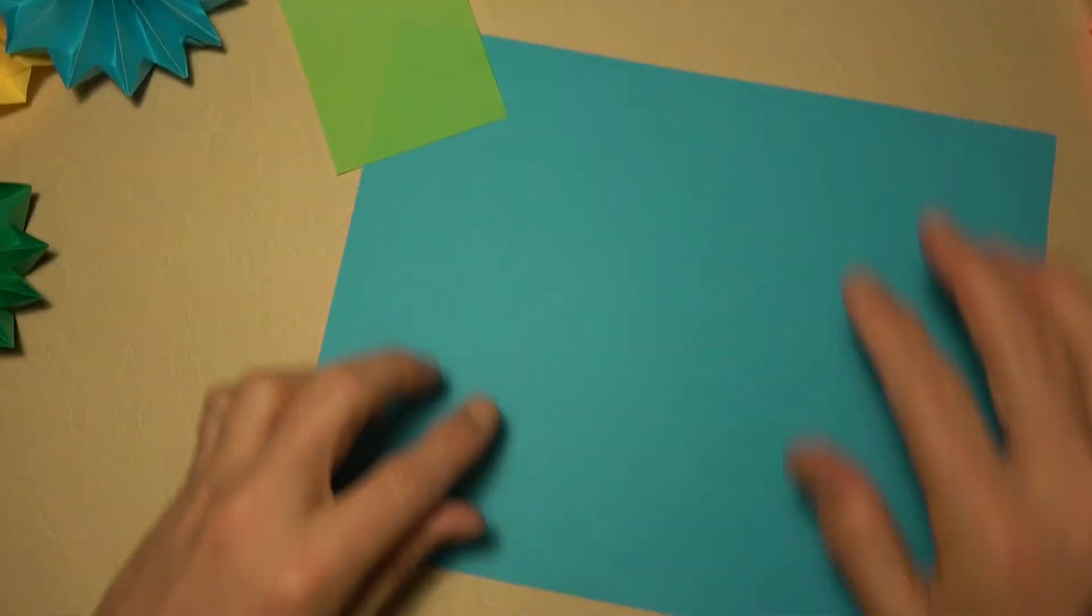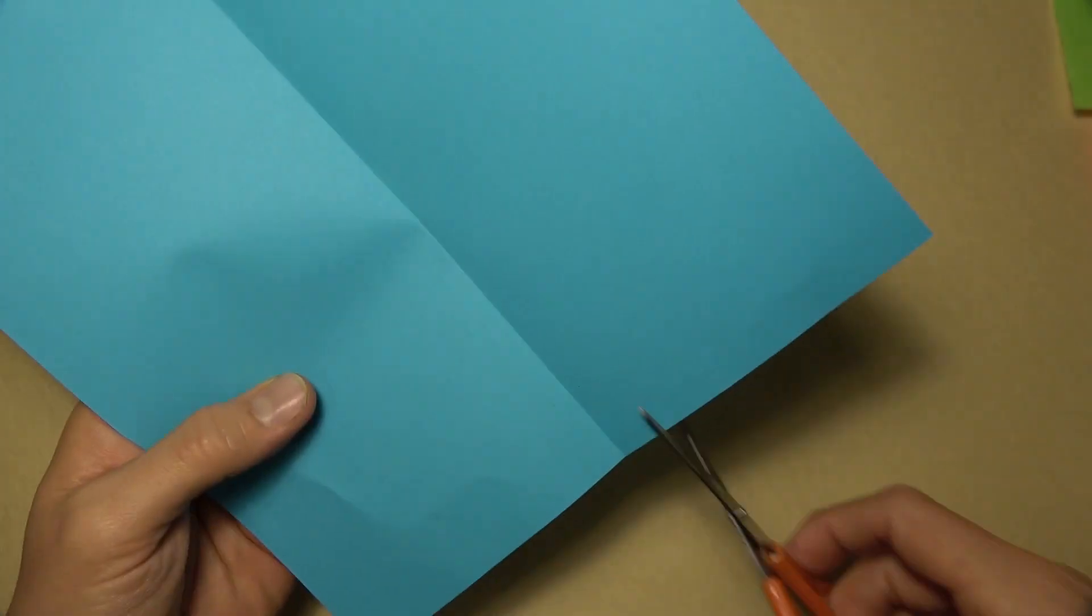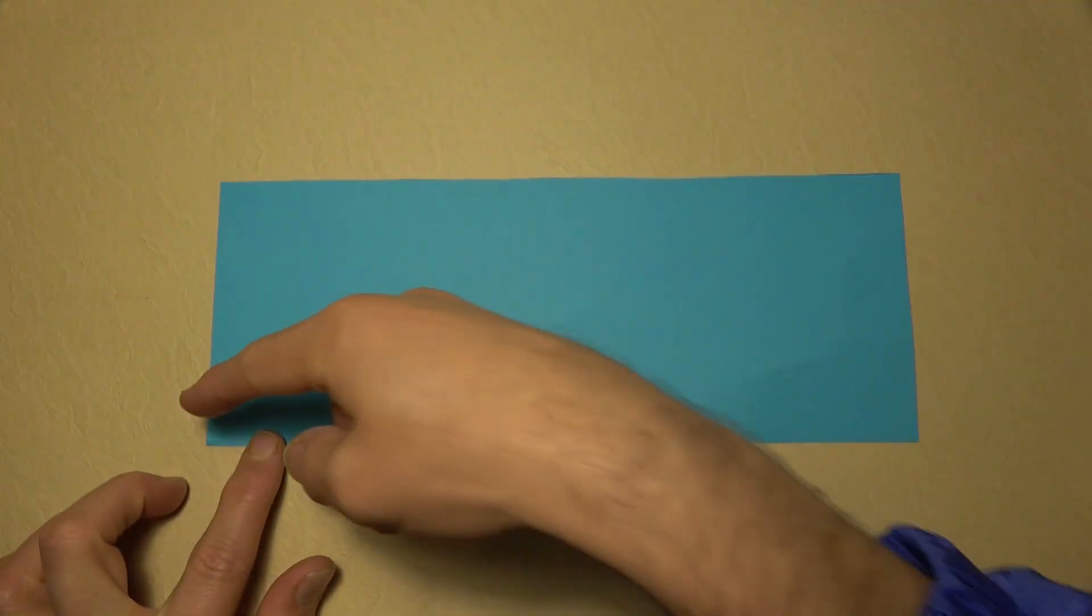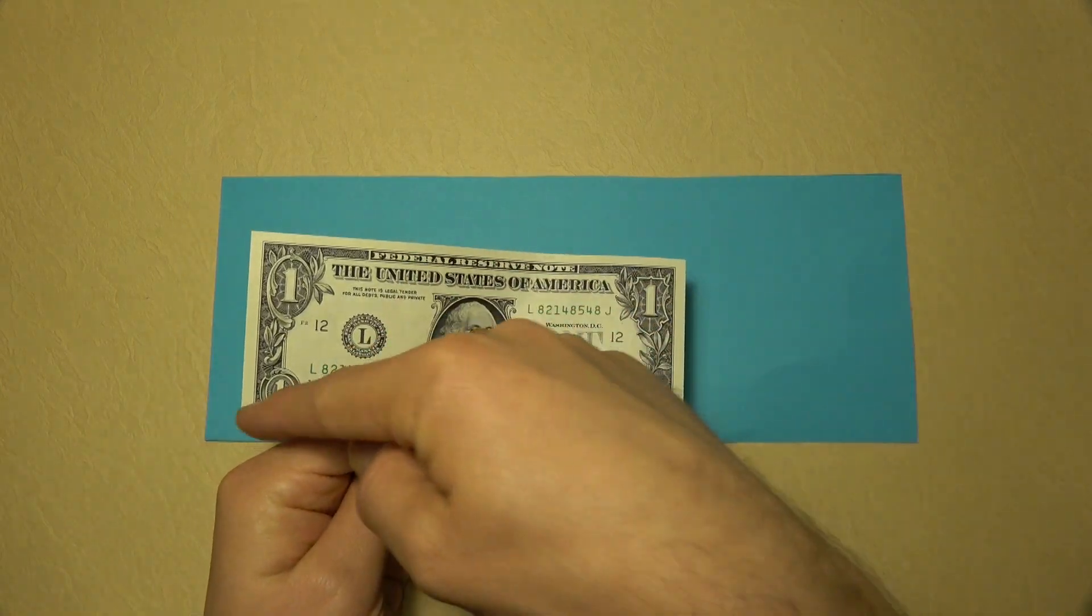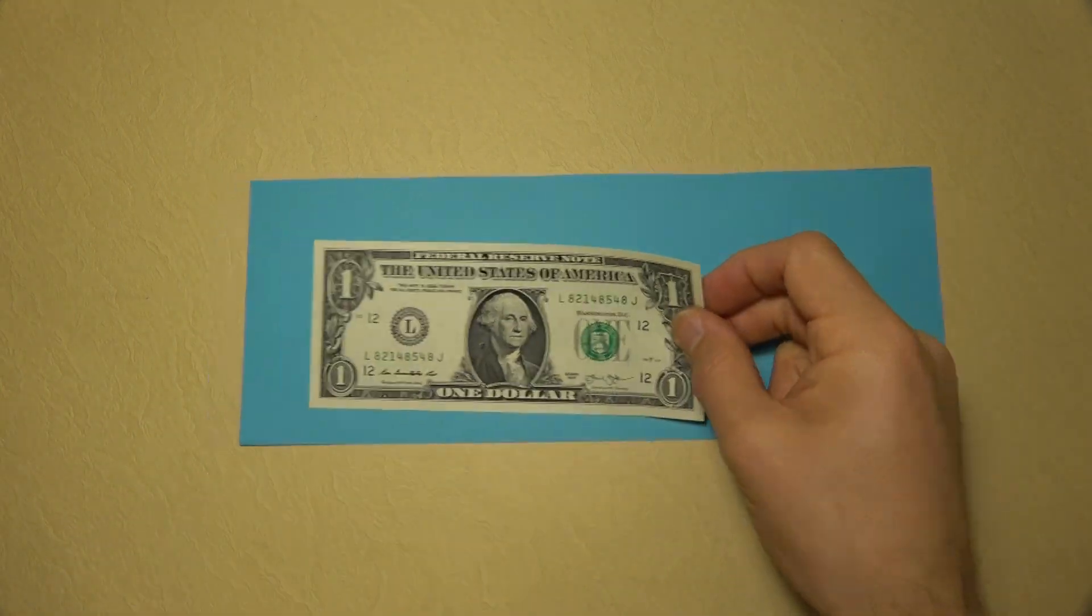But I'm going to show you how to fold it from half of a sheet of printer paper, which is four and a quarter inches by 11 inches. And that's close to the dimension of a dollar, which is three by seven.